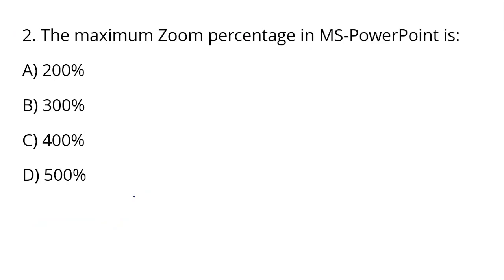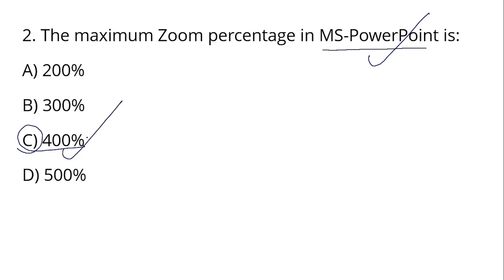Question number 2: The maximum zoom percentage in MS PowerPoint is? MS PowerPoint is Microsoft PowerPoint, used for slides. The maximum zoom percentage in PowerPoint is 400%, whereas in Microsoft Word it is 500%.